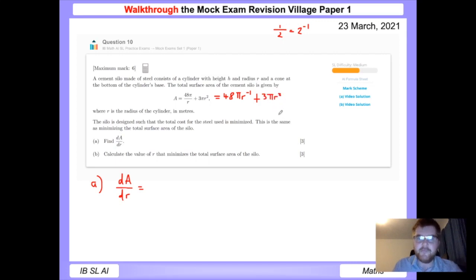So I like to write the function like this first and then differentiate. To do dA by dr, we take our index and bring it to the back. So we get minus 1 times 48π. Remember, π is just a number, and we reduce the index by 1, so we're going to get r to the power of minus 2. Likewise here, we do this separately. We take the 2 in the index and bring it to the back. 2 times 3π, and then we reduce the index by 1. This will then become r to the power of 1.